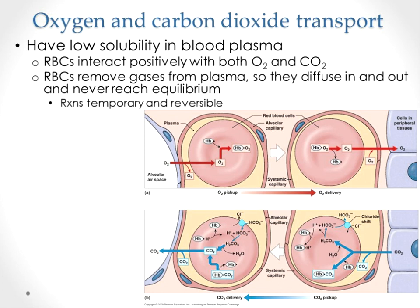So we've talked about ventilation and the gas laws. Now it's all about getting oxygen into the blood in the lungs, getting carbon dioxide out of the blood in the lungs, and at the tissues for internal respiration — getting oxygen from the blood into the tissues and carbon dioxide from the tissues into the blood. Oxygen and carbon dioxide can be carried as dissolved gas in the blood, but that's not a sufficient amount for our demands, so we need alternative methods.